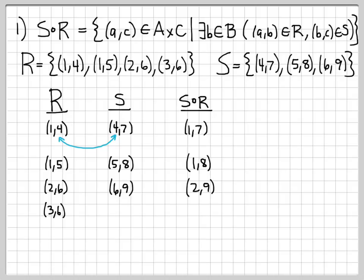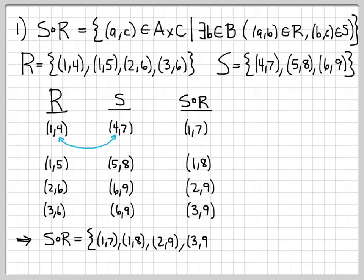Finally, (3,6) is in R. Is there an element in S that starts with 6? Yes, it's (6,9) again, so (3,9) is an element of S∘R. So S∘R consists of the pairs (1,7), (1,8), (2,9), and (3,9), all elements of A×C. Note that if we had not been able to find a b in B such that (a,b) was in R and (b,c) was in S, then we would not have produced an element. It just so happened that in this example we found a match each time.